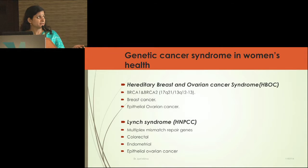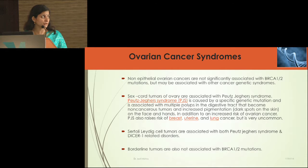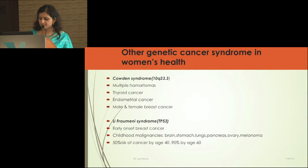The two main syndromes — HBOC and Lynch — are responsible for epithelial ovarian cancer and breast cancer, not non-epithelial ones. Lynch syndrome has a defect in the repair mechanism, giving a combination of colorectal, endometrial, and epithelial ovarian cancers. Non-epithelial cancers are not associated with BRCA1 and 2, but other syndromes may be involved, such as Peutz-Jeghers syndrome, where sex cord stromal tumours are found, along with multiple polyps in the digestive tract and skin pigmentations. Sertoli-Leydig cell tumours can also be part of Peutz-Jeghers syndrome. Importantly, borderline tumours are not due to BRCA1 and BRCA2 mutations — there is no hereditary predisposition for borderline tumours.